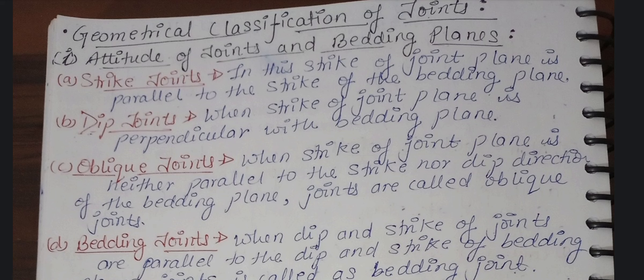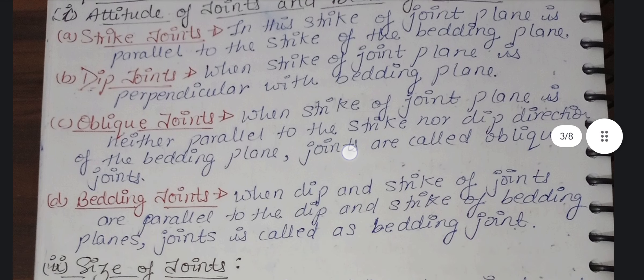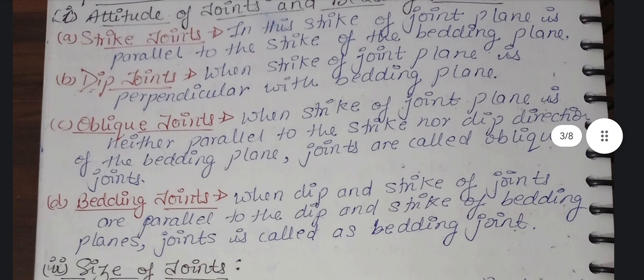First, we are going to study the attitude of joints and bedding planes. In respect of their orientation, there are 4 classifications: strike joint, dip joint, oblique joint, and bedding joint. These are probably similar to what you have seen in faults, so you don't need more difficulty.